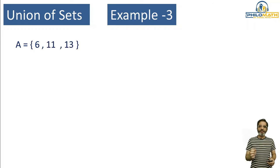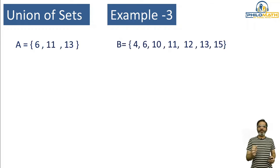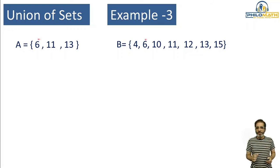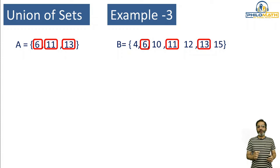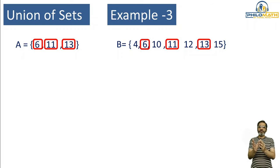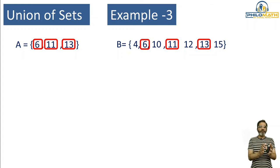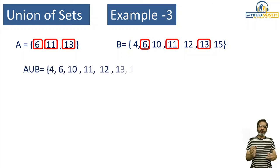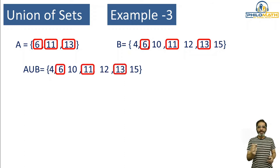Now let's see the third and last example. Set A has 6, 11, and 13, and Set B has 4, 6, 10, 11, 12, 13, and 15. If you see the two sets carefully, the numbers 6, 11, and 13 are repeated. More importantly, all elements of Set A are present in Set B. When I write A union B, I write down all elements but make sure I don't repeat 6, 11, and 13 — I write them only once.